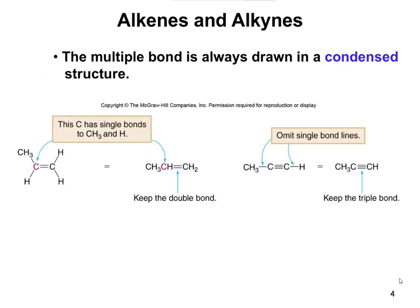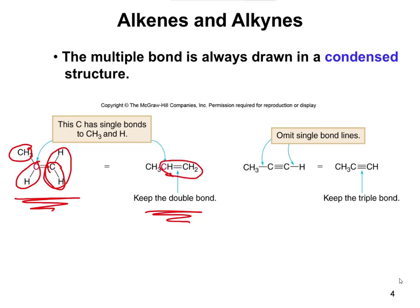Whenever we're drawing out the structures for alkenes and alkynes, we always have to include where the multiple bond is — whether it's a double bond or a triple bond, you have to show that in the condensed structure. So in the condensed structure, we still show where that double bond is: CH3 attached to CH through a double bond, then CH2. Similarly, with a triple bond, you have CH3, then a carbon-carbon triple bond, with the other H shown. You always show where that multiple bond is in your condensed structure.